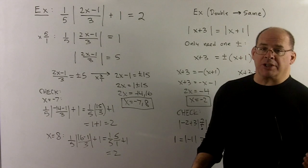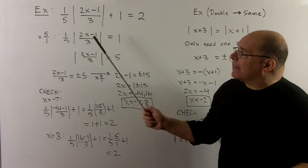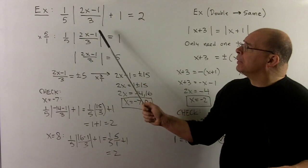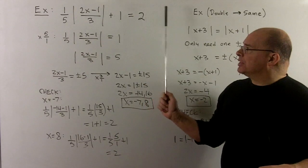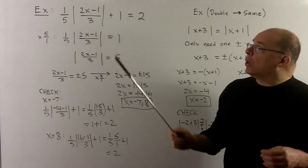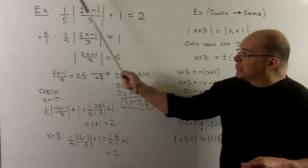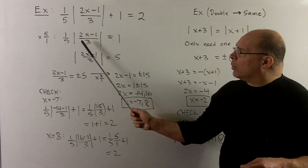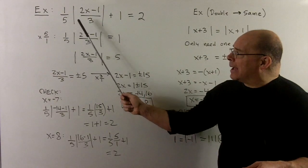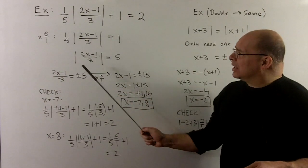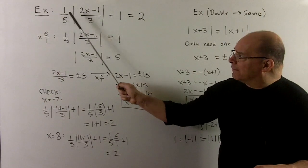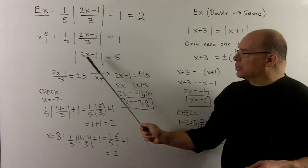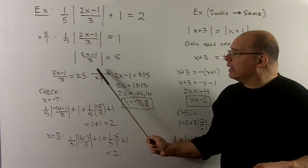For an example with a little bit of fraction work, let's try one-fifth absolute value of the quantity 2x minus 1 over 3 plus 1 equal to 2. The first goal is to isolate the absolute value. So we'll move the 1 to the other side and then what's left over, we're going to multiply by a 5 over 1 on both sides to clear out the denominator of 5 out in front of the absolute value. So that's going to leave us with absolute value of 2x minus 1 over 3 equal to 5.